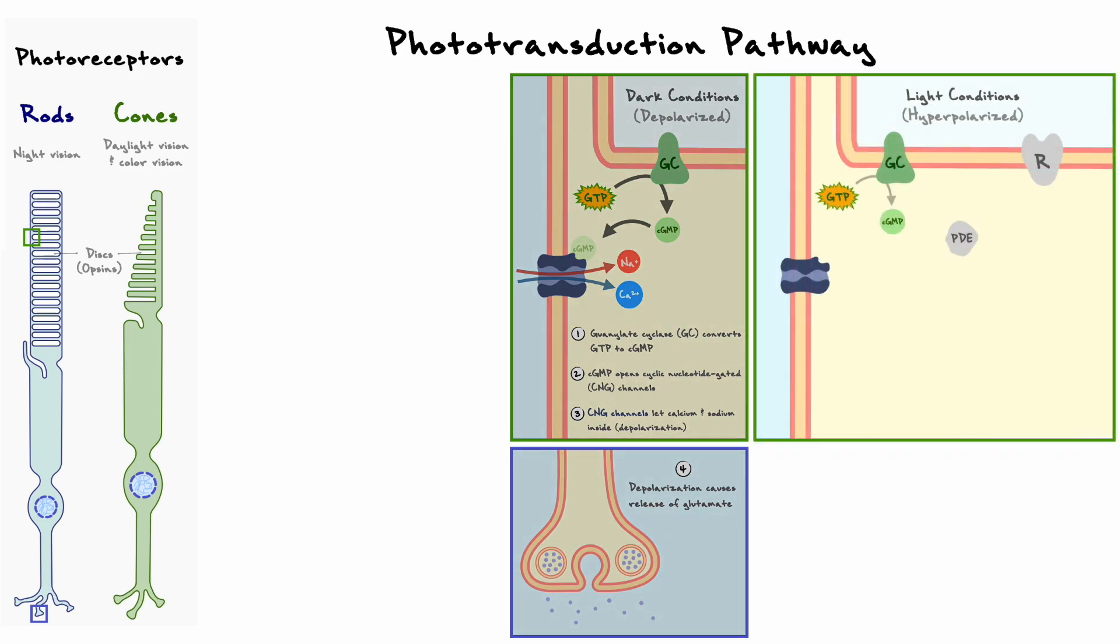Now, when light enters the eye, individual photons of light can hit opsins, and this causes the receptor to change conformation and become active. Opsins are G-protein coupled receptors, and their activation allows the activation of a G-protein called transducin by exchanging the GDP of the alpha subunit to a GTP.